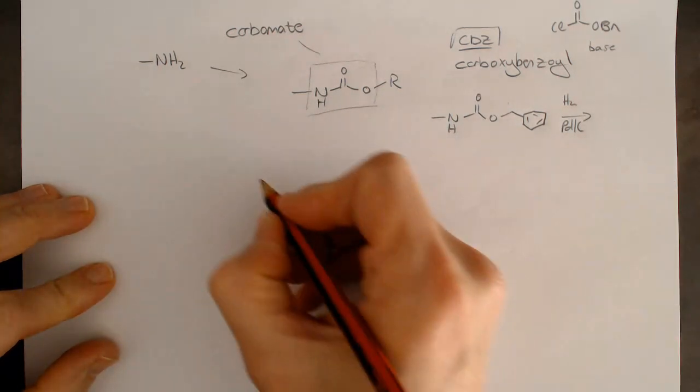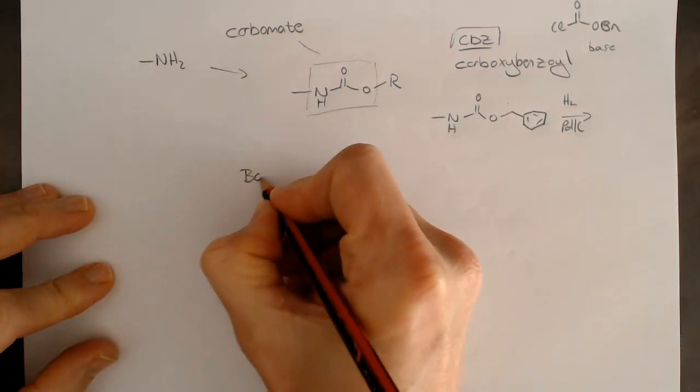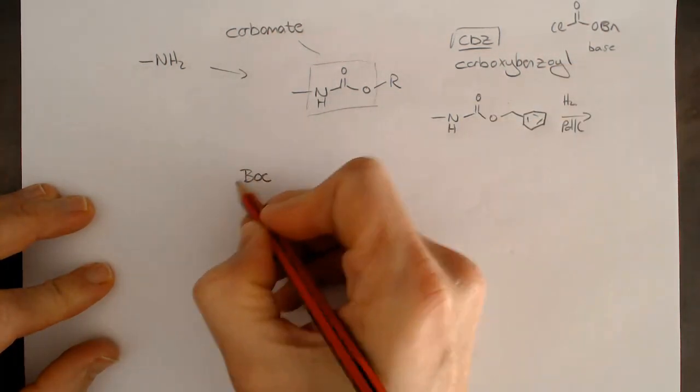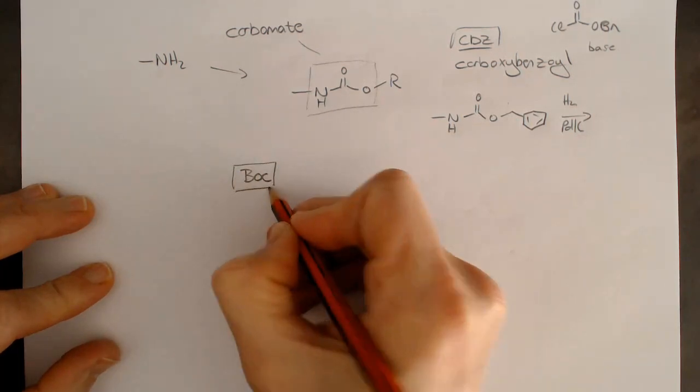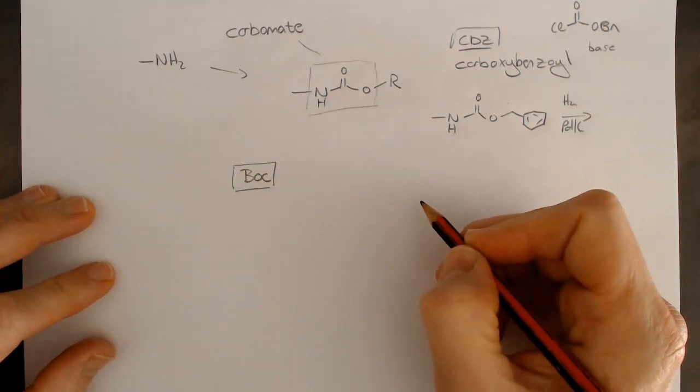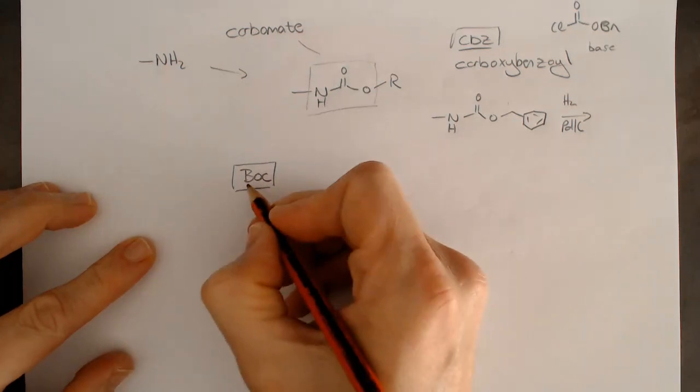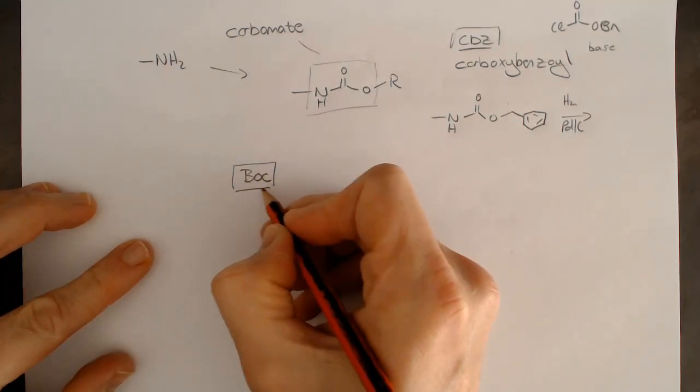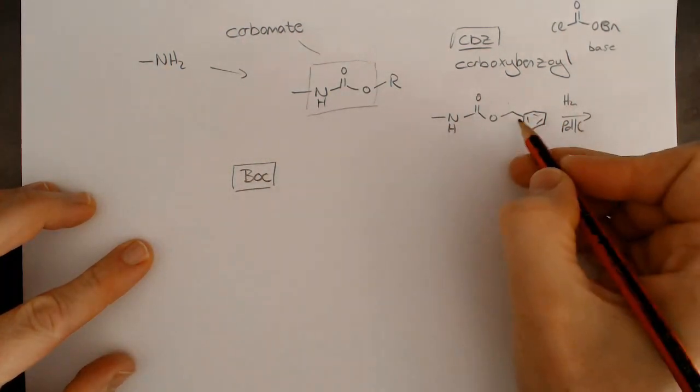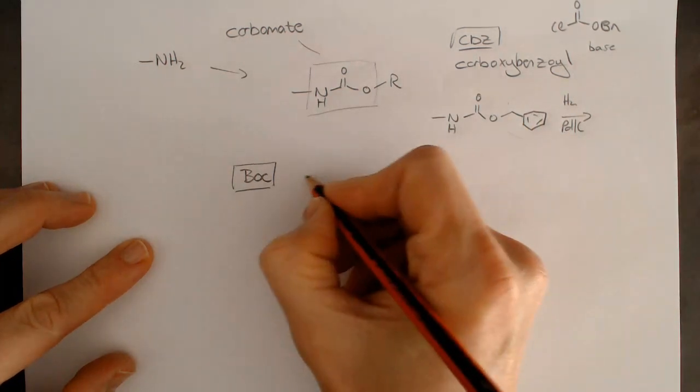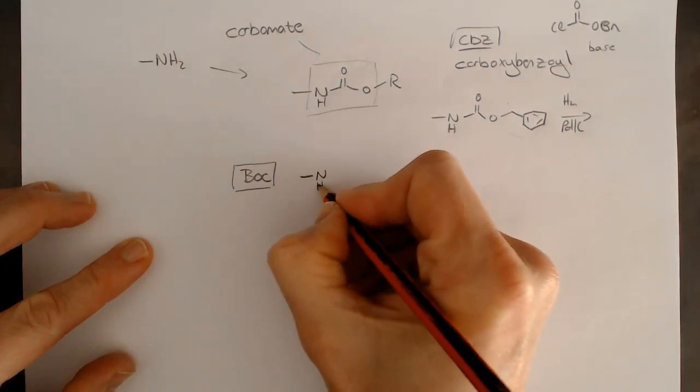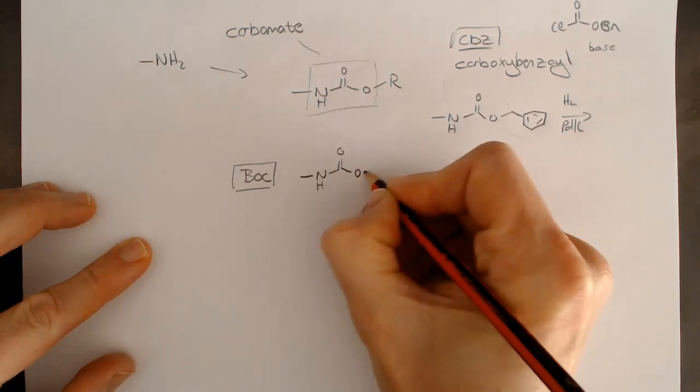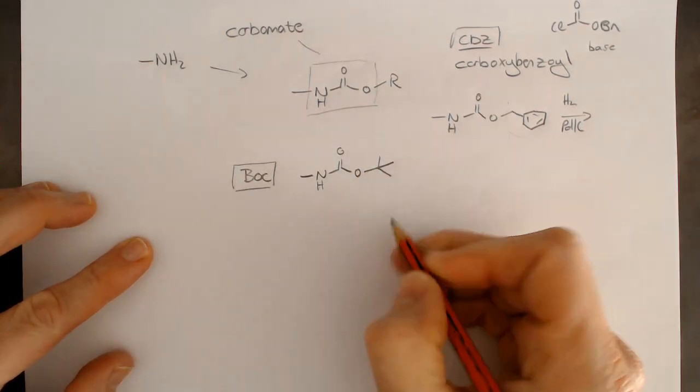The second group that we're going to look at, which is really important, possibly this one you'll see more frequently, is the BOC group. BOC is just tert-butyl oxycarbonyl. Instead of the benzyl group, we've got a tert-butyl group. It's a nitrogen and O and t-butyl. That's the BOC group.